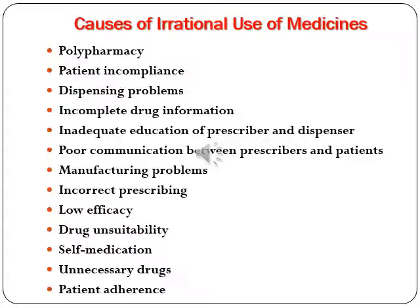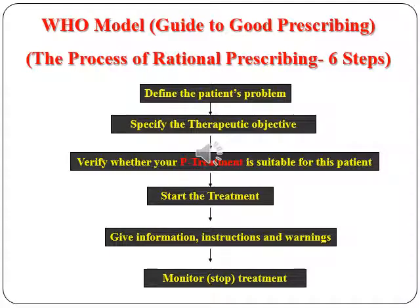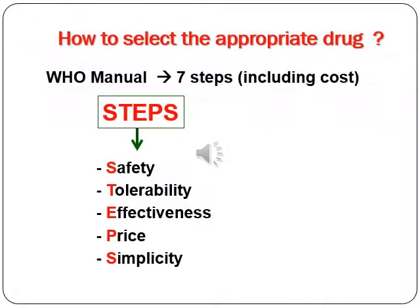From the WHO practical manual, the Guide to Good Prescribing outlines a number of steps: define the patient's problem, specify the therapeutic objective, verify whether your treatment is suitable for this patient, start the treatment, give information, instructions, and warnings, and monitor or stop treatment.